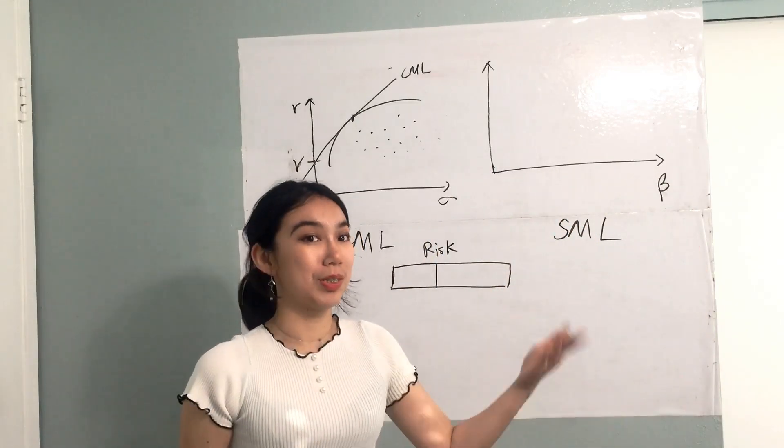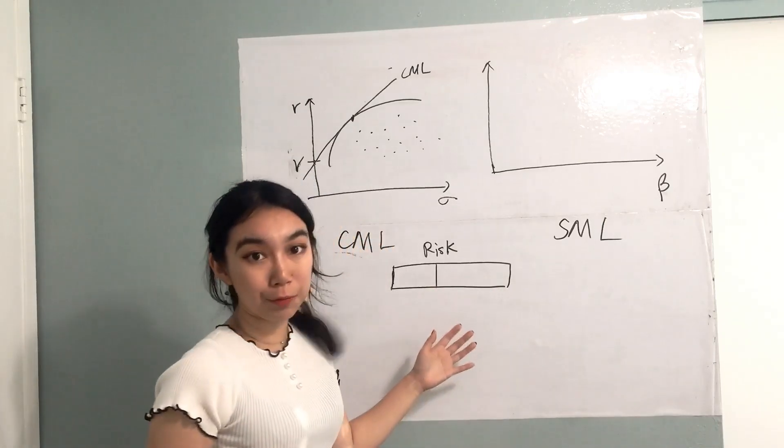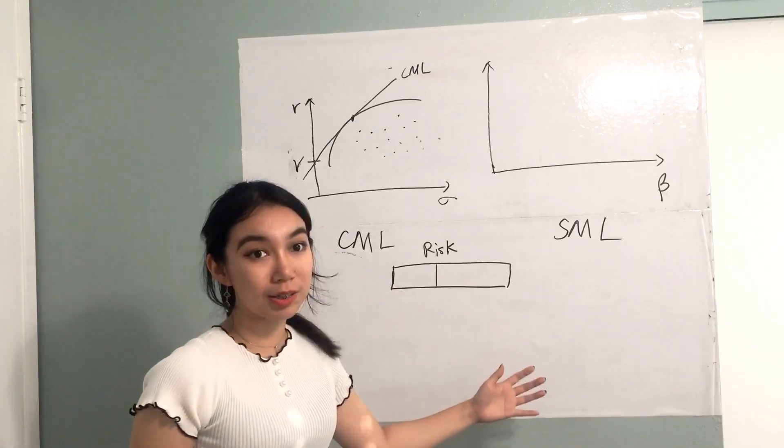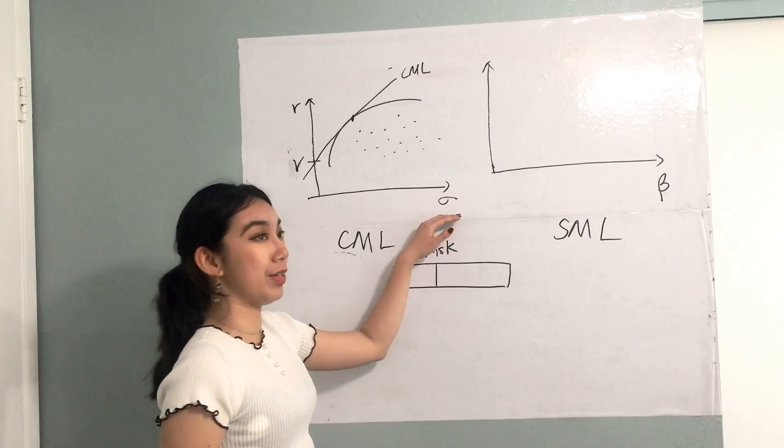We can think about it like this. When we are investing in an individual portfolio, let's imagine an individual stock. The total risk of the stock is the standard deviation.